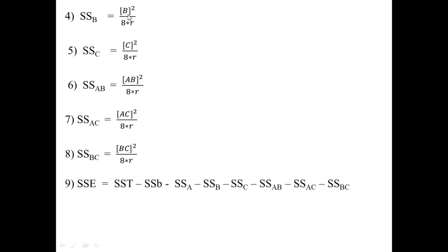SSB = [B]² / (8R), SSC = [C]² / (8R), SSAB = [AB]² / (8R), SSAC = [AC]² / (8R). Since we use total confounding with ABC totally confounded on R replicates, we delete that interaction effect from our study. Therefore we have only 7 remaining effects, and SSE = SST − SSB − SSA − SSB − SSC − SSAB − SSAC − SSBC.